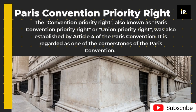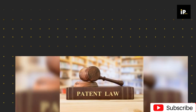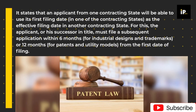The Convention Priority Right, also known as Paris Convention Priority Right or Union Priority Right, was established by Article IV of the Paris Convention. It is regarded as one of the cornerstones of the Paris Convention. It states that an applicant from one contracting state will be able to use its first filing date, in one of the contracting states, as the effective filing date in another contracting state.